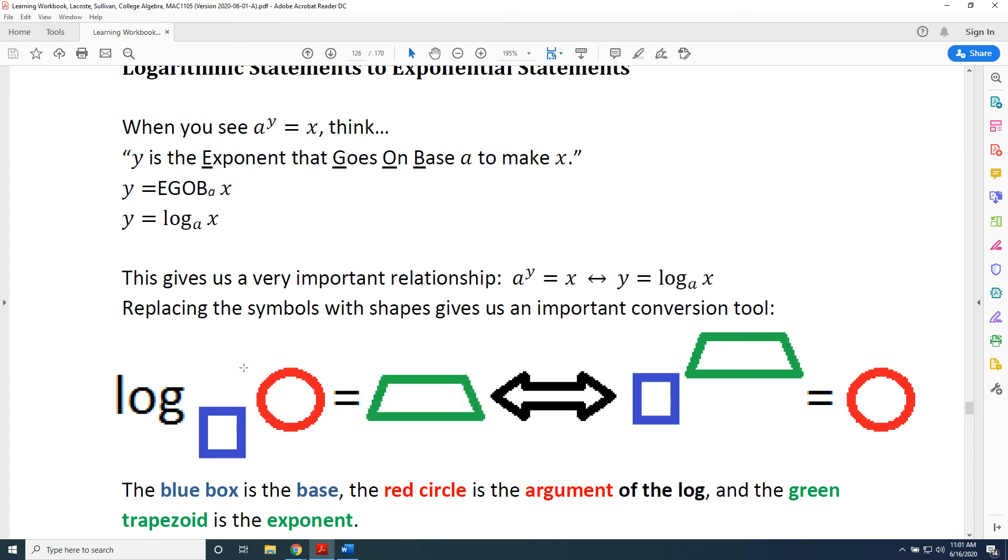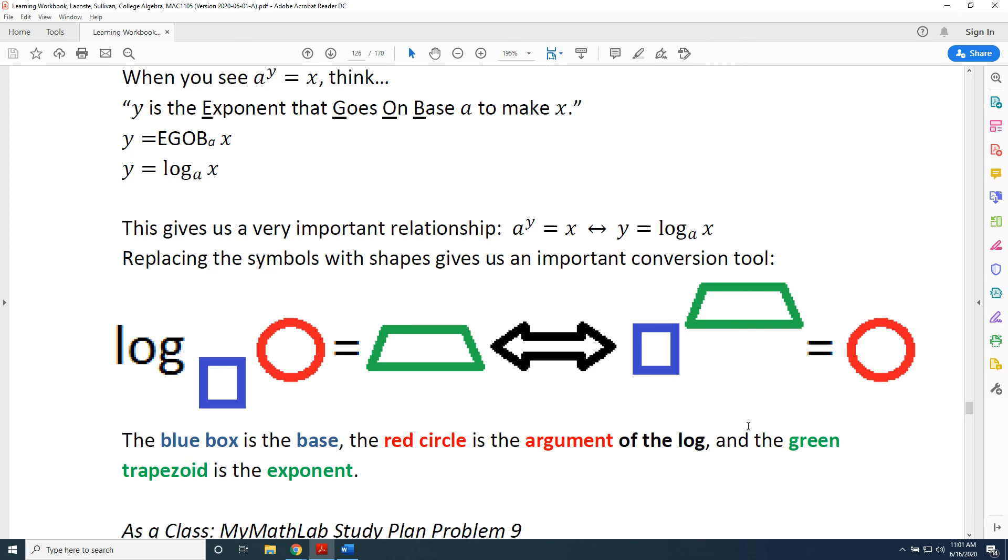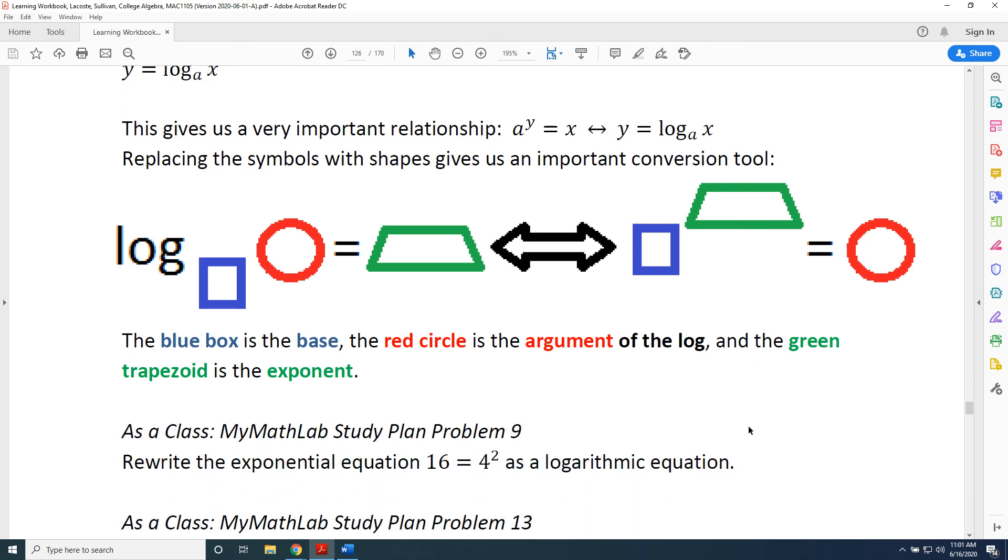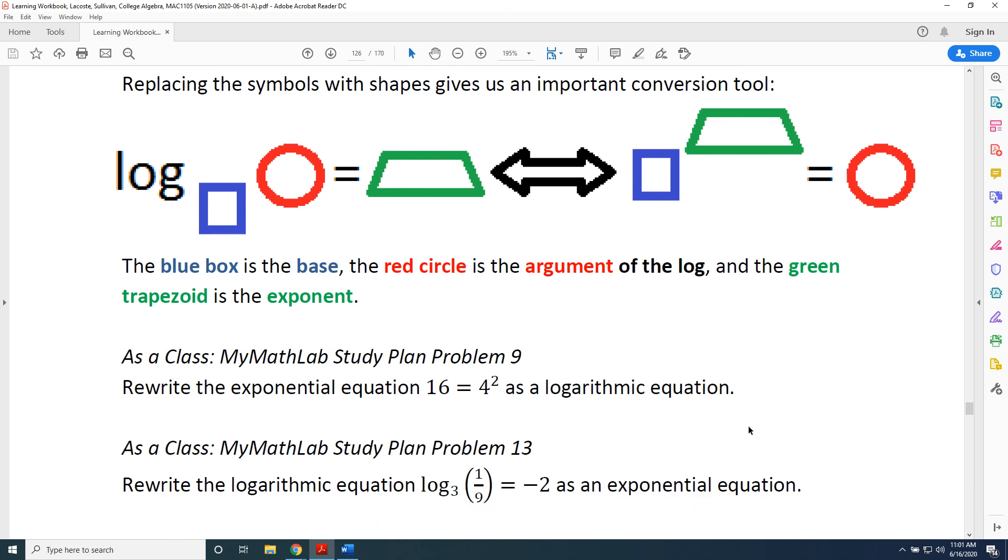And then finally, the name we give to the thing we're taking the log of is called the argument. So you just have to remember that the red circle is the argument. Knowing your vocabulary is extremely important. Make sure you practice all of these names because they will be used throughout this video series, and you need to know what is represented by each one.